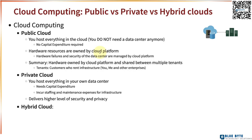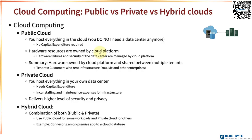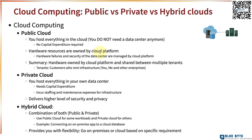The last option is hybrid cloud. A hybrid cloud is a combination of both public cloud plus private cloud, so you would use public cloud for some workloads and private cloud for others. A good example is connecting an on-premises app to a cloud database. Going hybrid cloud provides you with flexibility — you can go on-premises or cloud based on a specific requirement.